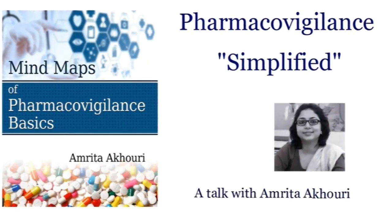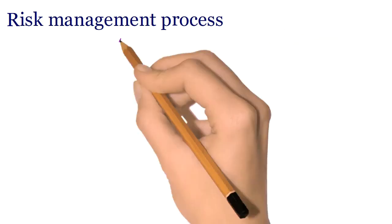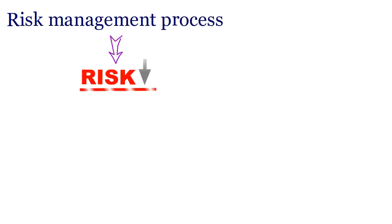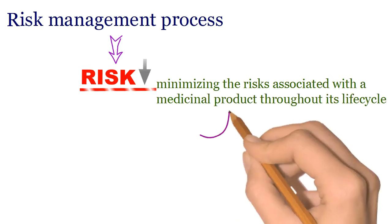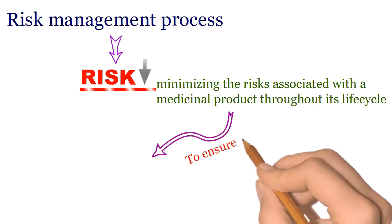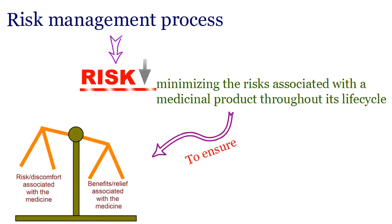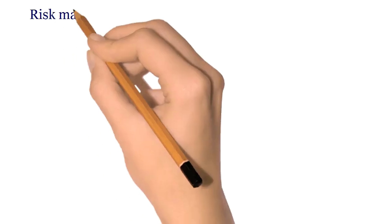In pharmacovigilance, risk management process is a continuous process. This process works on minimizing the risks associated with a medicinal product throughout its lifecycle. Effective management of risk helps in ensuring that the benefits of a particular medicine exceed the risks related to that medicine, and to achieve this objective, certain activities and interventions are utilized in risk management process.